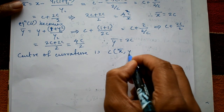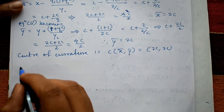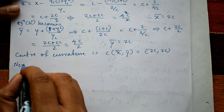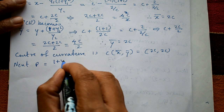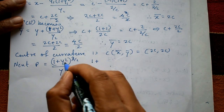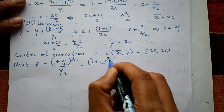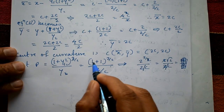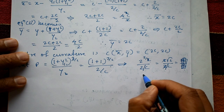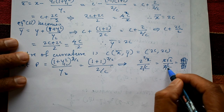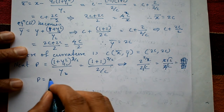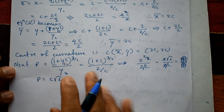The center of curvature is (x̄, ȳ) = (2c, 2c). Next, find ρ. ρ = (1 + y1²)^(3/2) / y2 = (1 + 1)^(3/2) / (2/c) = 2^(3/2) / (2/c) = (2√2) / (2/c). The 2s cancel, leaving ρ = c√2.